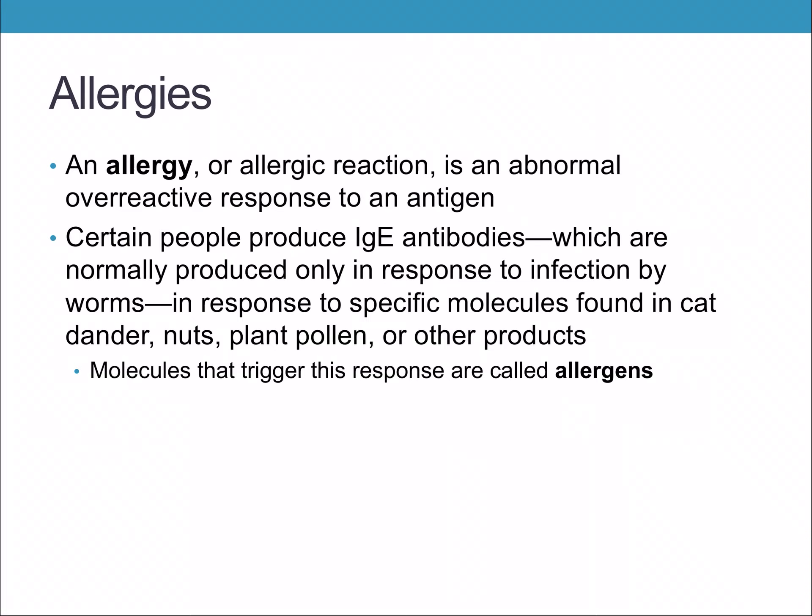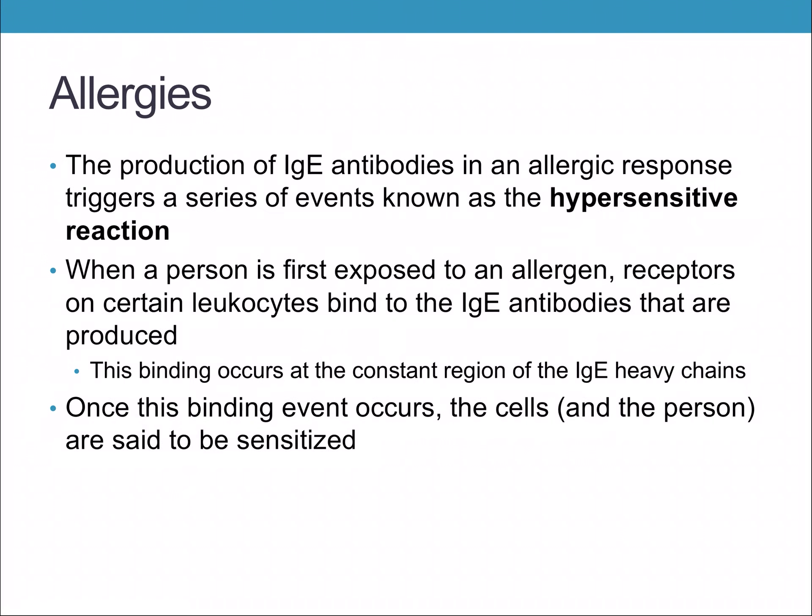These substances are called allergens because they trigger an over-response. Cat dander isn't going to kill you, but your body produces IgE antibodies when it really shouldn't, and it can be very dangerous if someone is producing them at much too high a frequency. The production of these antibodies triggers a series of events known as the hypersensitive reaction. When a person is first exposed to an allergen, receptors on certain leukocytes bind to the IgE antibodies produced.